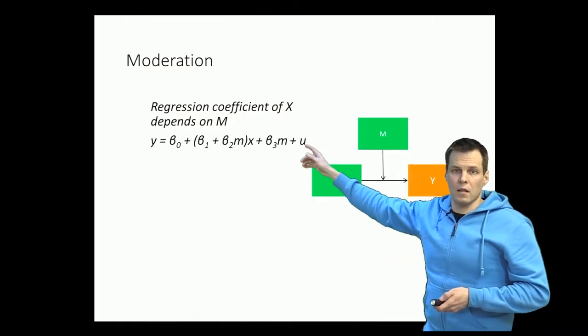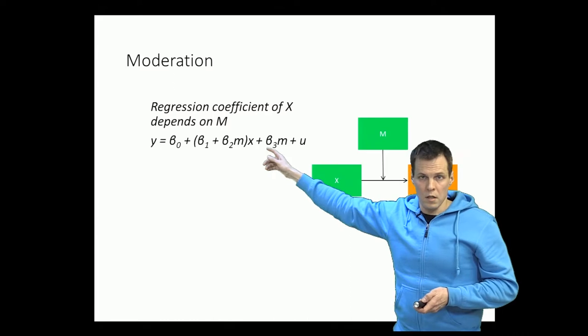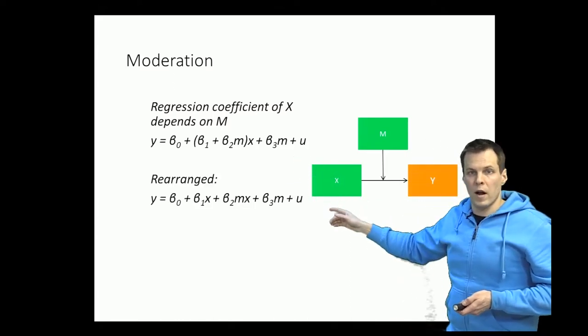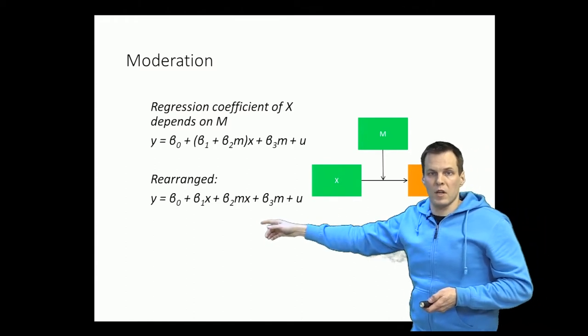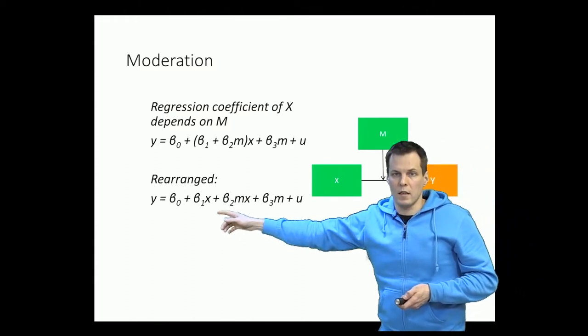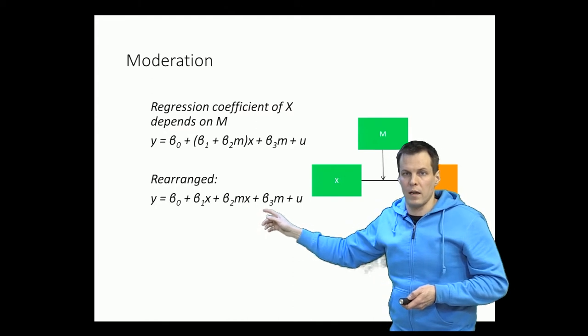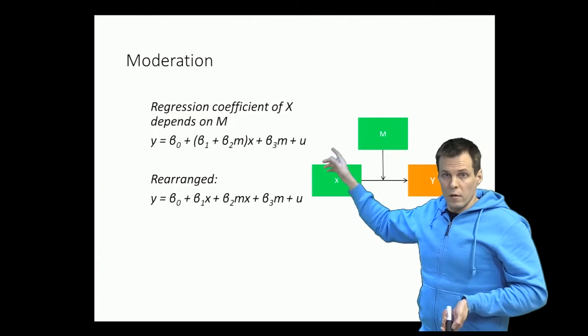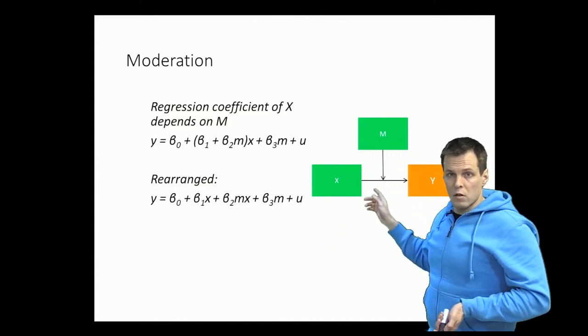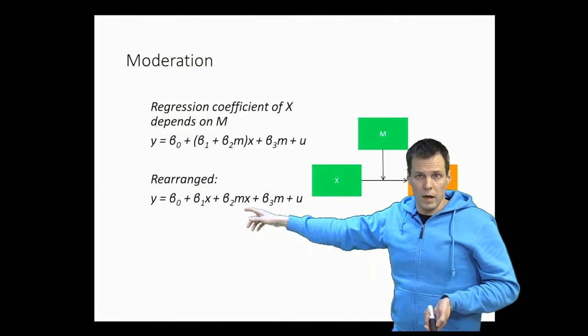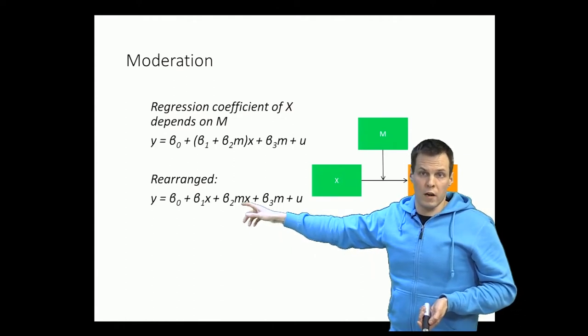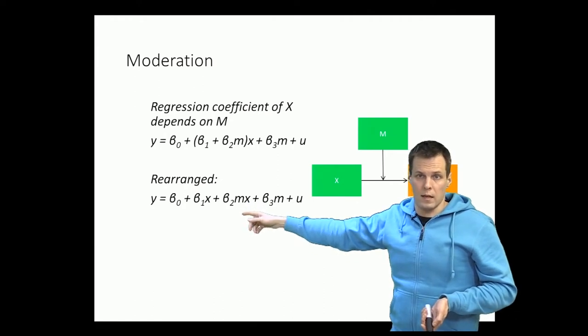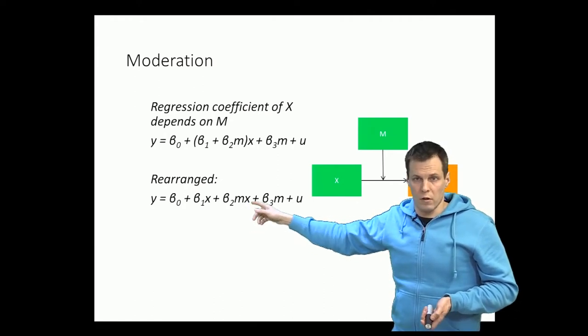We can estimate that kind of model directly in regression analysis if you write it differently. We can rewrite it without the parentheses and it becomes beta 0 plus beta 1 x plus beta 2 mx plus beta 3 m. So the idea of how we estimate this kind of moderation models is that we multiply the moderator and the interesting variable together, and then we add all two variables and their product as independent variables to the regression analysis.